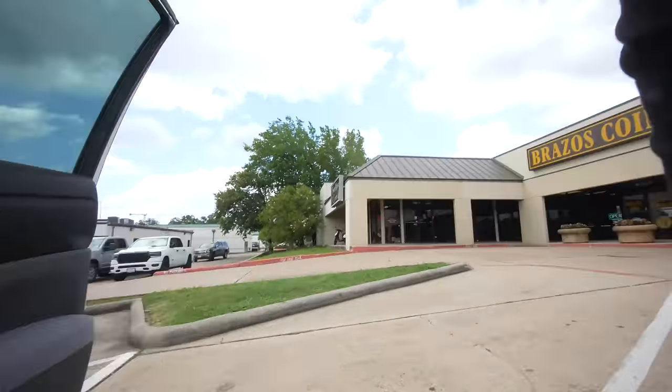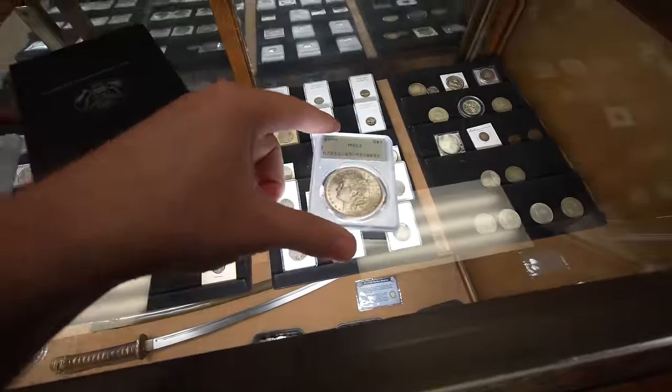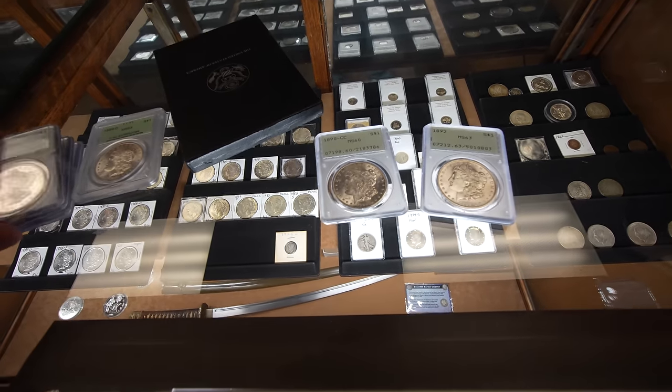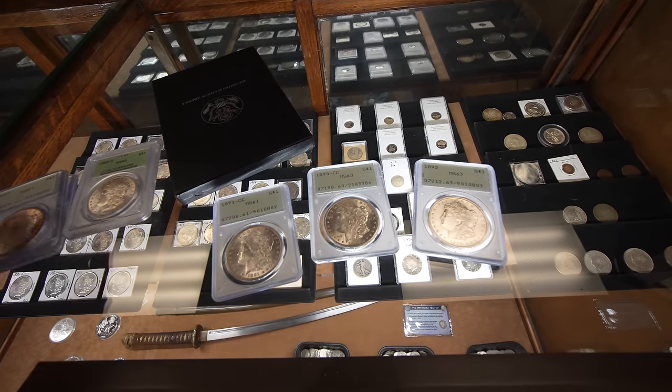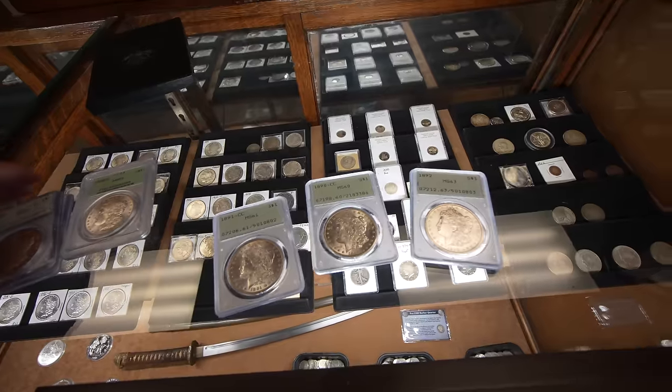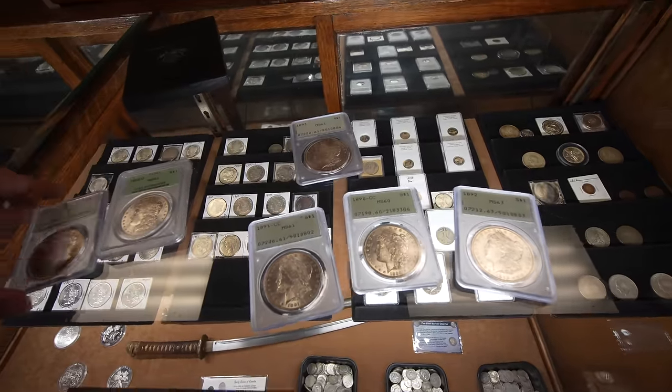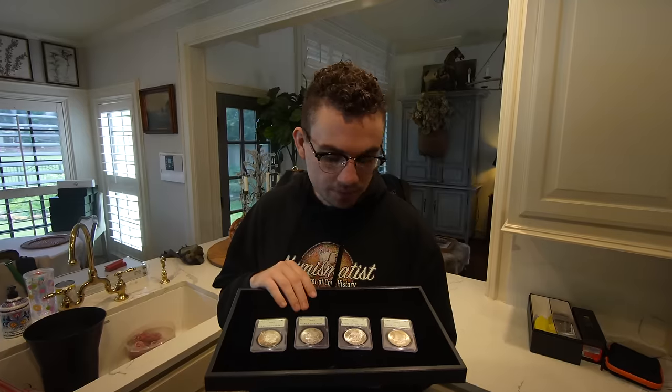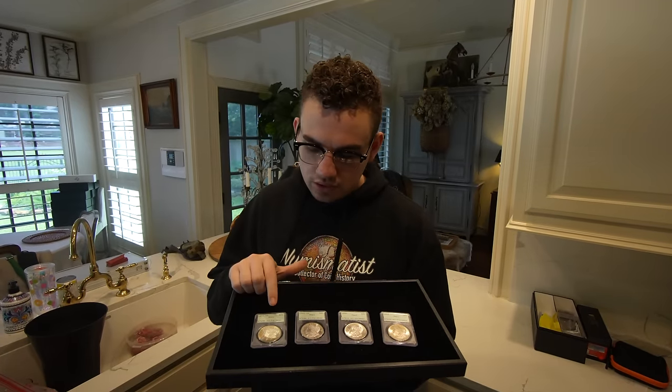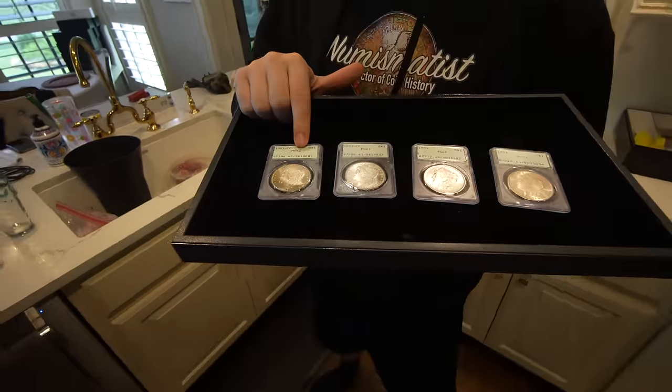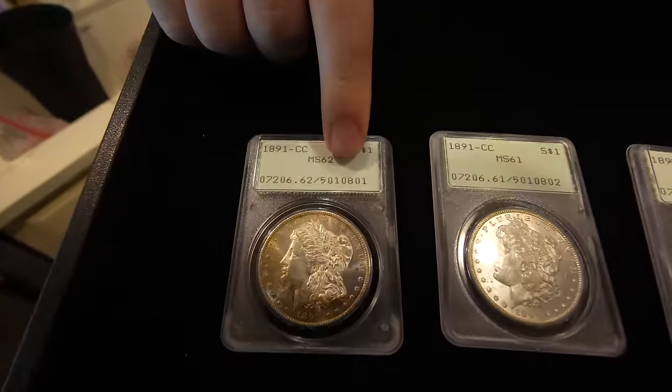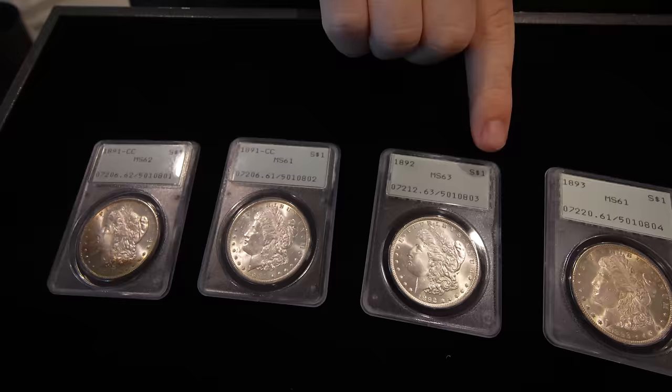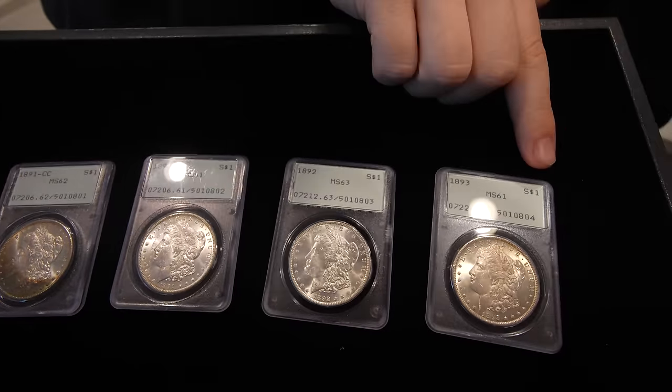So last week, we ended up going to College Station to pick up a few better date Morgan dollars in rattlers. And a lot of collectors are after these. A lot of these coins were cracked out because people thought they were undergraded back then. And now there are new NGC or PCGS holders. And the cool thing about these better dates is that they're not only better dates in rattlers, but they're also consecutive cert numbers. So if you start off on the left here, it's 501, 08, 01, and this is 02, this is 03, and this is 04.